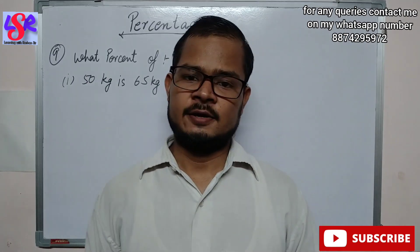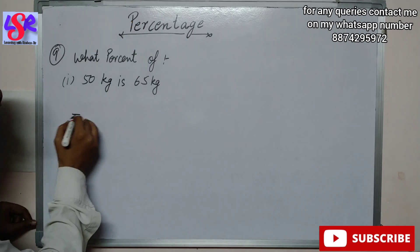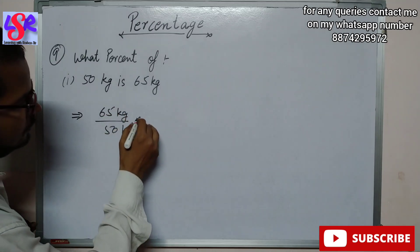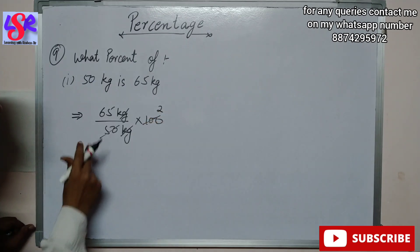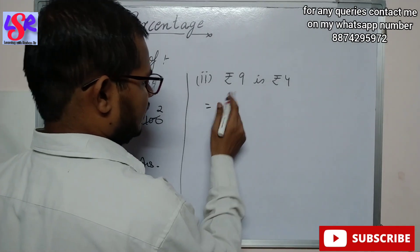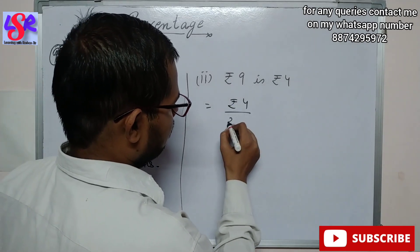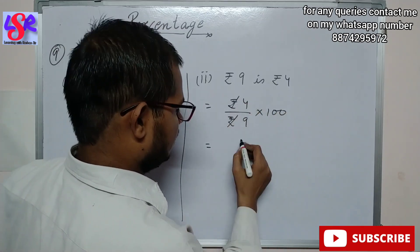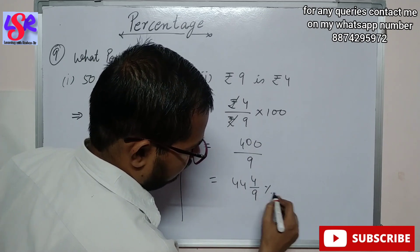Now we are moving to Question 9. Here we have to find what percent of 50 kg is 65 kg. This can be written as 65 upon 50 into 100. The kg units cancel, and 50 into 2 is 100, leaving 65 into 2 which is 130% as the answer. For the second part — what percent of rupees 9 is rupees 4 — we write rupees 4 upon rupees 9 into 100. The rupee signs cancel, giving 400 upon 9, which equals 44 whole 4/9 percent as the answer.